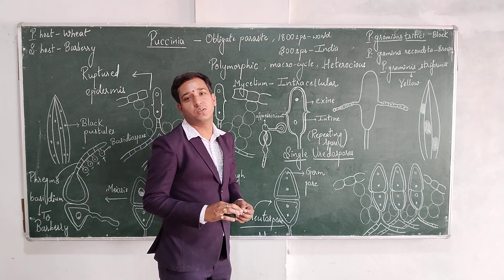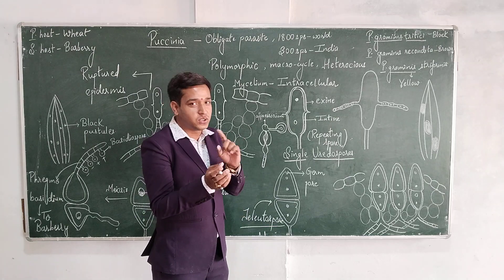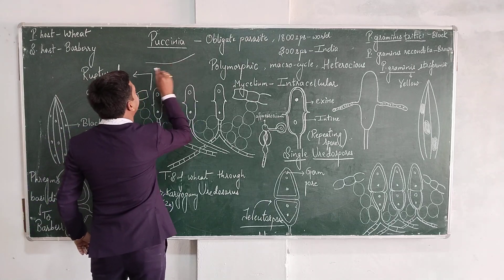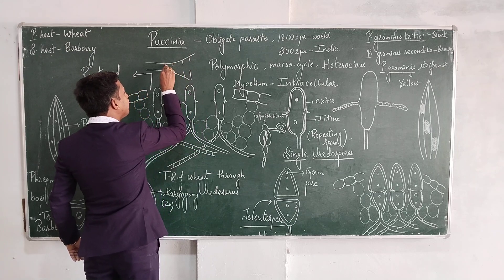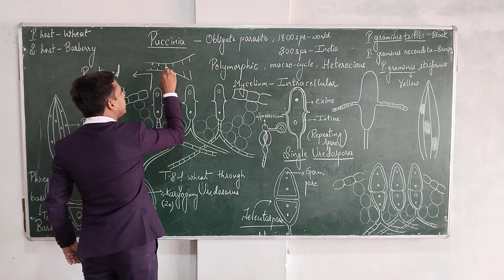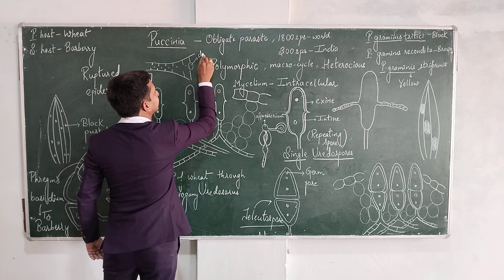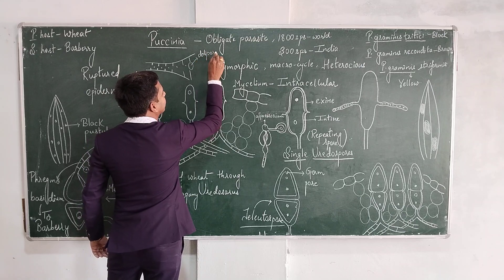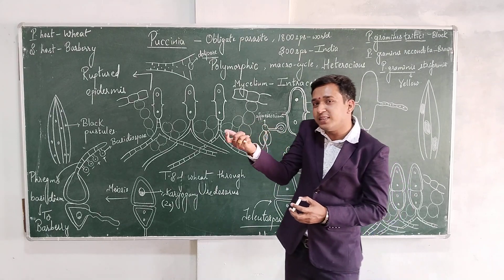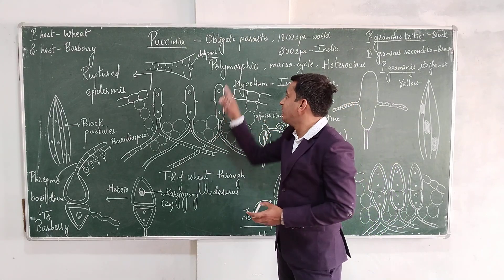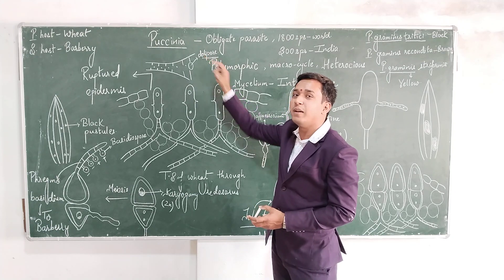As Puccinia belongs to the class Basidiomycetes, the body of the fungus is known as mycelia. If you see the mycelia of Puccinia, a septate structure is found with a nucleus in it, and in between the septa there is a pore called a dolipore. The presence of dolipore in the septa helps the protoplast of one cell to move to the other cell.